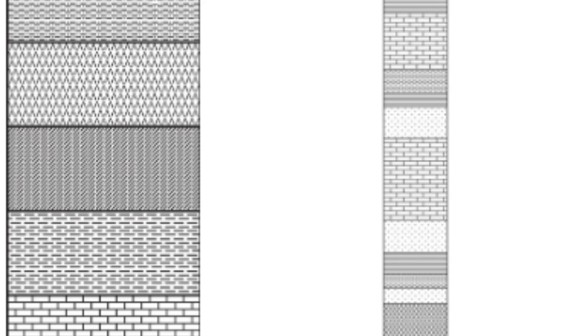Lithostratigraphic correlation: One of the most basic methods of correlation involves comparing the lithology and sedimentary characteristics of rock units. Geologists look for similar rock types, sedimentary structures such as bedding patterns, cross-bedding, or ripple marks, and sedimentary facies — distinctive sedimentary environments — in different locations. Matching lithological features can indicate a correlation between strata.